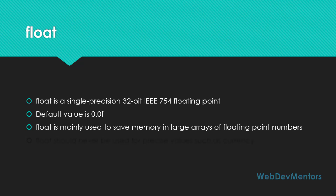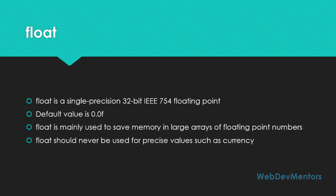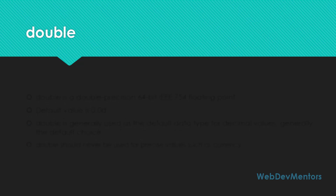Float is mainly used to save memory in large arrays of floating point numbers — similar to how byte is used to save memory in large arrays. Float should never be used for precise values such as currency. If you want precise calculations like currency or percentages, float is not the data type you should use. The next data type we're going to see is double.